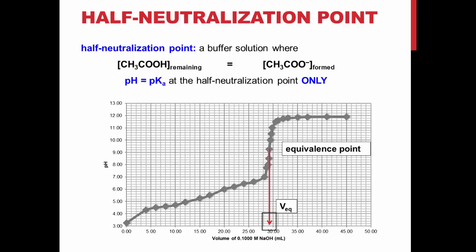Graphically, the neutralization point can be easily found by dividing the volume of the equivalence point by 2. Interpolation to the y-axis from this point gives the point at which the pH is equal to the pKa and the concentration of the acetic acid and bases are equal.